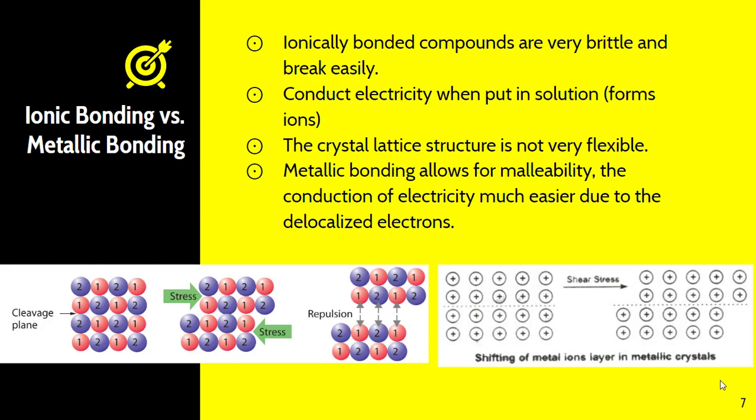Metallic bonding, on the other hand, allows for malleability. You know that metals are malleable. They are bendable. They are flexible. You have taken a piece of aluminum and bent it and folded it before without it breaking. And that is due to the fact that the electrons are delocalized. So when you do move around those positive charges, the delocalized electrons actually move with them.